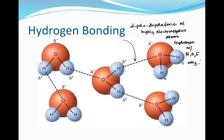Hydrogen bonding gives rise to lots of different properties. For example, water, H₂O, exhibits hydrogen bonding. That's the reason water has such a high boiling point, a high surface tension, and other special properties because of the way it's bonded and put together.